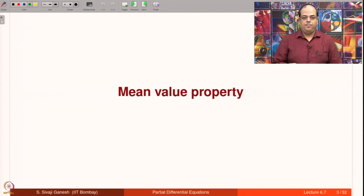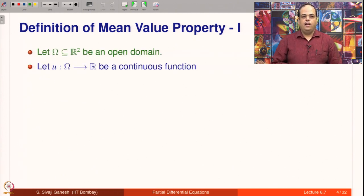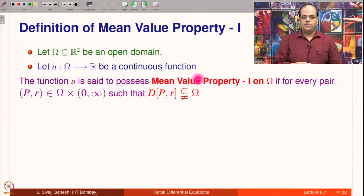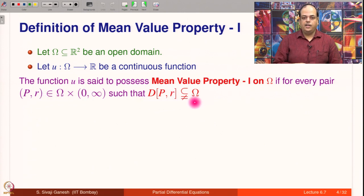So, what is mean value property? We are going to define 2 notions: mean value property 1 and mean value property 2. Let omega inside R² be an open domain, and let U from omega to R be a continuous function. U is said to possess mean value property 1 on omega if for every pair P, R such that the closed disc of radius R centered at P is properly contained in omega.